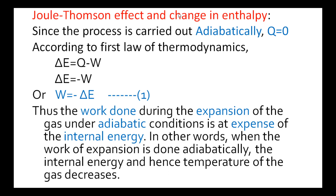Next, derivation for the Joule-Thomson effect and constant enthalpy. Since the process is carried out adiabatically — adiabatic process means no heat is absorbed and no heat is evolved — so Q is equal to 0. According to first law of thermodynamics, delta E is equal to Q minus W. Substituting Q equal to 0, we get delta E equal to minus W. Multiplying with minus on both sides, we get W equal to minus delta E. That is, in adiabatic process, some work is done and there is a decrease in internal energy. The work done during expansion of gas under adiabatic conditions is at the expense of internal energy. When the work of expansion is done adiabatically, the internal energy decreases and hence the temperature of the gas decreases, so the gas cools down.